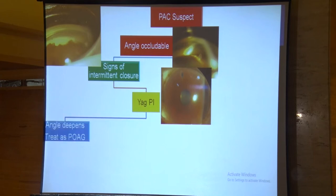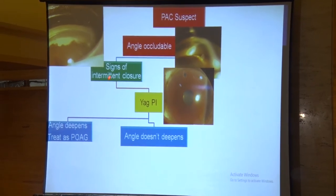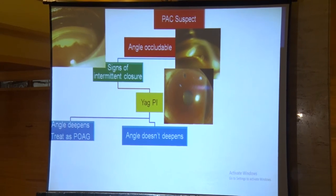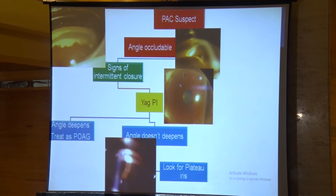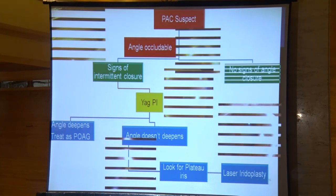Once the angle deepens after iridotomy, we treat these patients as primary open-angle glaucoma patients. But if the angle doesn't deepen after YAG iridotomy, the pathology is somewhere else. Look for the double hump sign of plateau iris syndrome — visible on gonioscopic examination or on anterior segment OCT. In plateau iris syndrome, YAG PI is not required; laser iridoplasty is the answer.